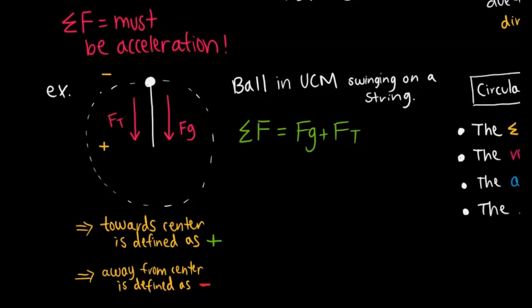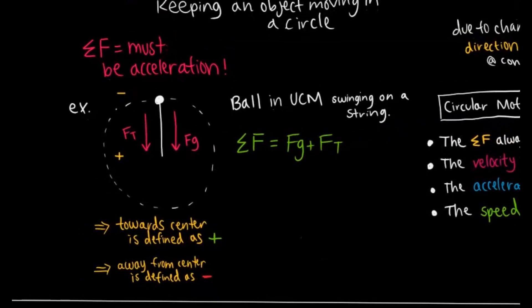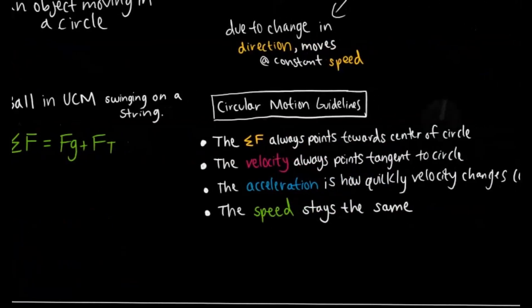So we define the center of the circle as positive and away from the center or outside of the circle as negative. So in this case, the net force would be Fg plus Ft. And what you'll find is that your net force will always be the greater value because that is the direction in which the acceleration will point.